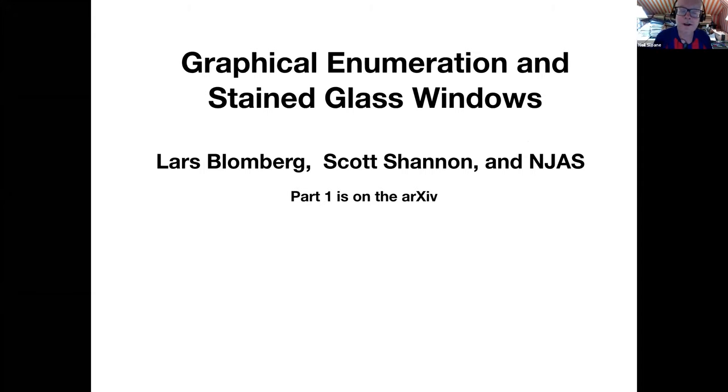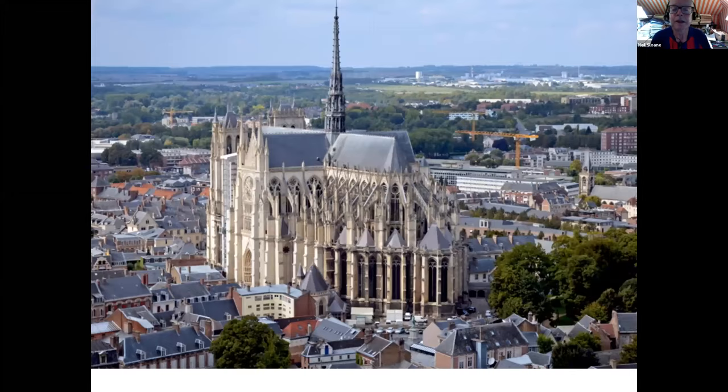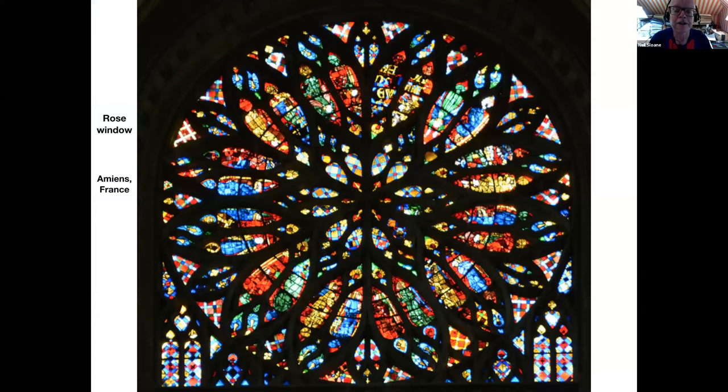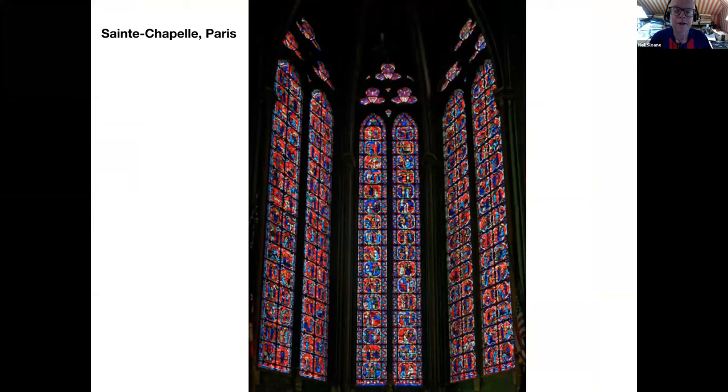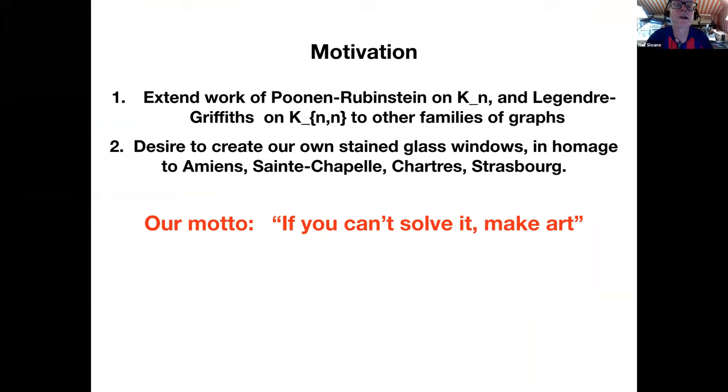This is joint work with Lars Blomberg, Scott Shannon, and part one is now in the archive. It's about graphical enumeration and stained glass windows. The motivation for this is things like this. This is one of the great Gothic cathedrals of the world in Amiens in France. It has rose windows that are just amazing. And there in Paris, in the Saint-Chapelle, there are rectangular stained glass windows just unbelievably beautiful. That was part of our motivation was to make, I've always wanted to make stained glass windows that sort of looked like that. The mathematical motivation was to extend the work of Poonen, Rubenstein, Legendre, and Griffiths on the complete graph. They analyzed the complete graph on n nodes and the complete bipartite graph.